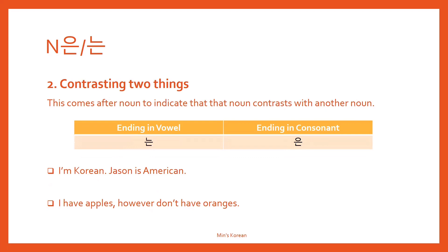The second use of 은/는 is contrasting two things. It comes after a noun to indicate that the noun contrasts with another noun. So if there are two nouns that are contrasting, you can use 은/는. Ending in a vowel, 는, and ending in a consonant, 은.